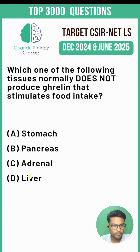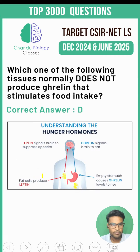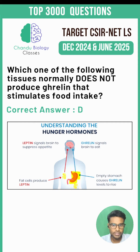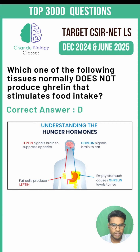The correct answer is Option D. The liver normally does not produce ghrelin. Ghrelin is primarily produced by the stomach, particularly in the gastric fundus, and to a lesser extent in the small intestine, pancreas, and brain.